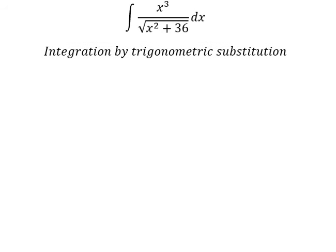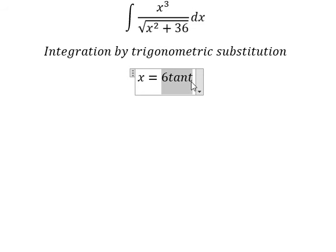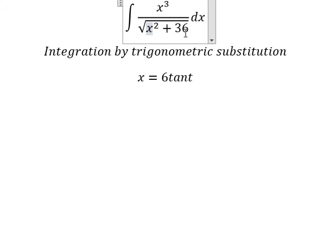I will put s equals to 6 times t. Because if I put this in here, we have 36 times t squared. We can do factorization: 10t squared plus 1, which we replace using secant of t squared, and then simplify the square root.